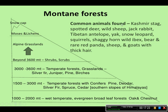Common animals found in mountain areas include the Kashmir stag, spotted deer, wild sheep, jack rabbit, Tibetan antelope, yak, snow leopard, squirrels, shaggy-horned wild ibex, bear, rare red panda, and sheep and goats with thick hair that are used for getting wool.